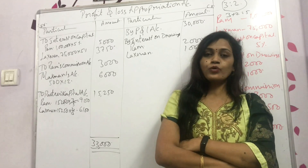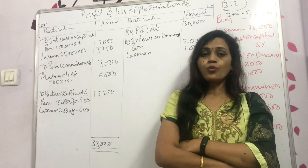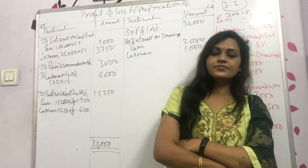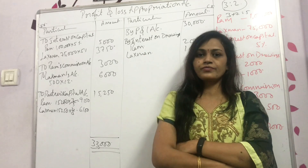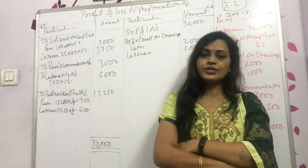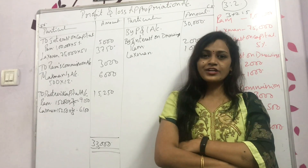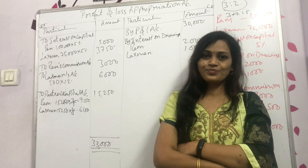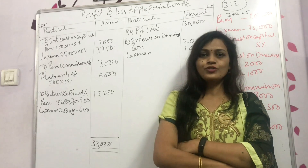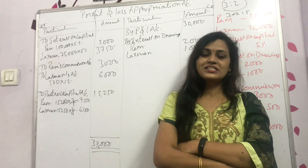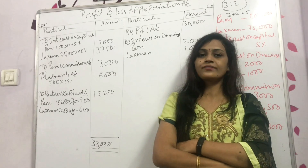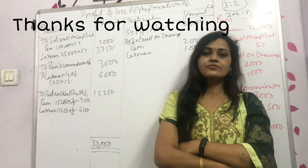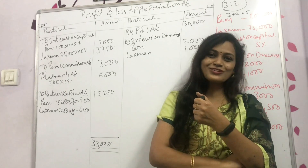Next we will solve the problem on guarantee of profit — what is guarantee of profit and how do you treat it. We will do 2–3 problems on that because one example is not enough to understand it fully. Hope all of you understood. If you did, please like, share, and subscribe. Comment any queries or suggestions in the chat box. Thank you very much, bye bye.